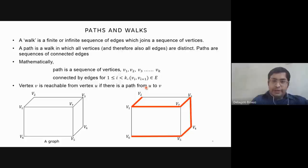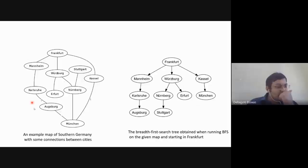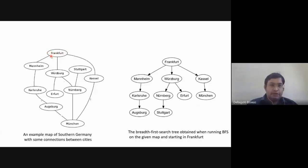With that we end the terminology part and move to the first algorithm: breadth-first search. This slide shows a map of southern Germany with connections between cities — Frankfurt, Mannheim, Karlsruhe, Nuremberg, Stuttgart, and others. We want to find a path from Frankfurt to Stuttgart crossing the minimum number of cities in between.